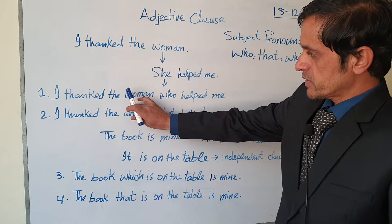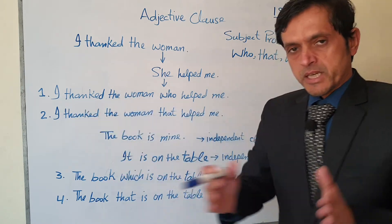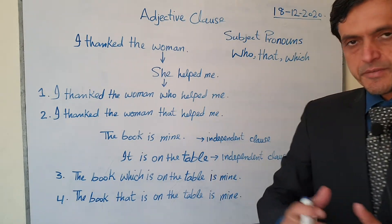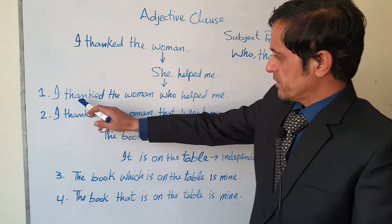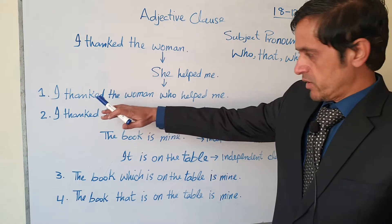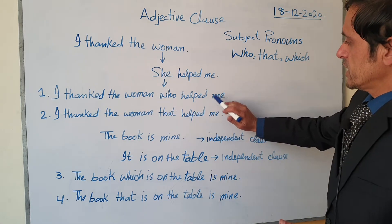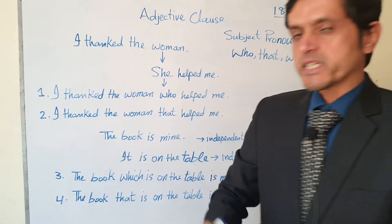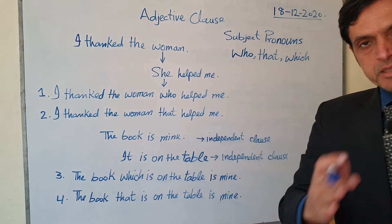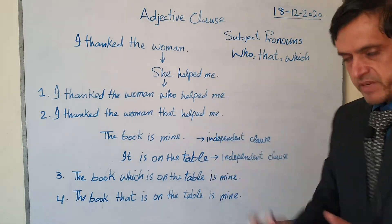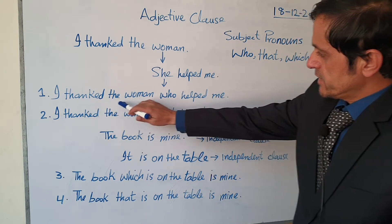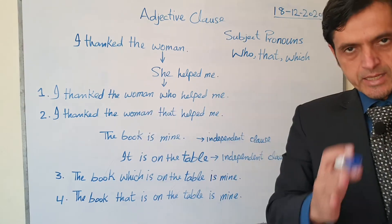A clause must have a subject and a verb — those are the two main signs of a clause. For example, if I say 'I thanked the woman,' this is a clause because it has the two basic requirements: a subject and a verb. 'Who helped me' — here also who is the subject and help is the verb, so this is also a clause.